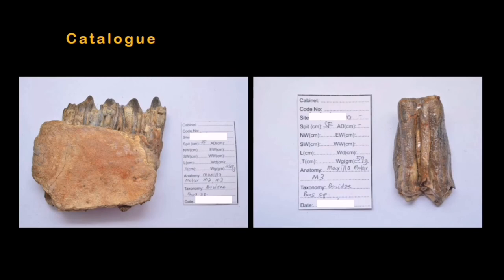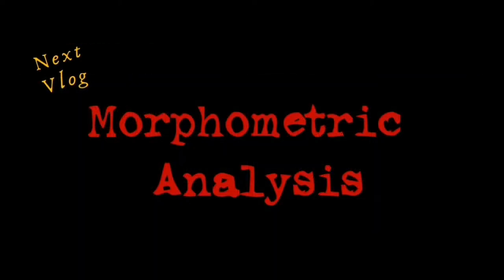I cataloged each sample presented to me. The most important thing in cataloging is to record the site where the samples or artifacts were found, their dimensions — length, weight, color — the anatomical structure you can identify, the taxonomy indicating which species it belongs to, and of course the date.